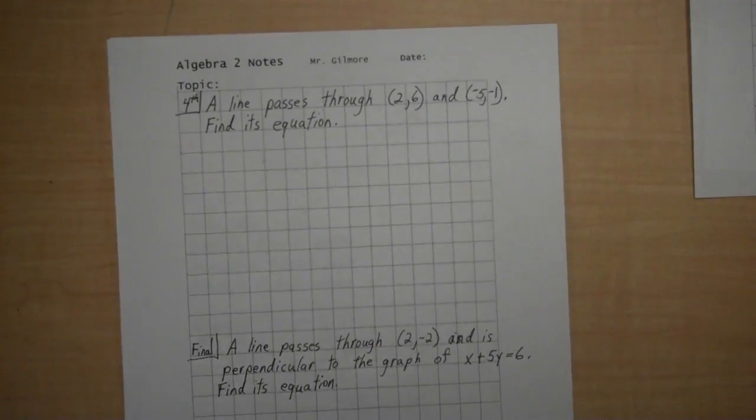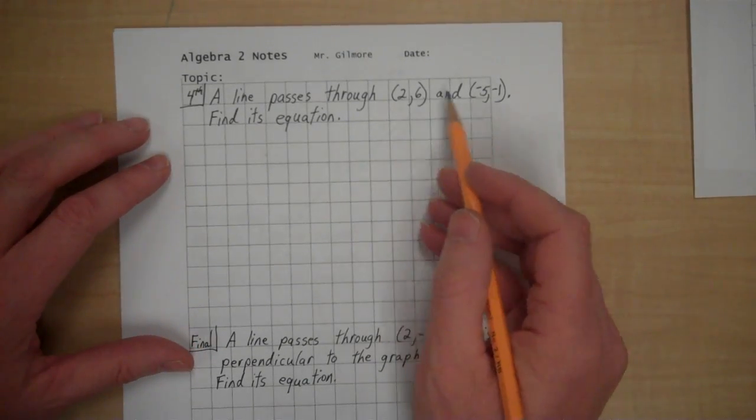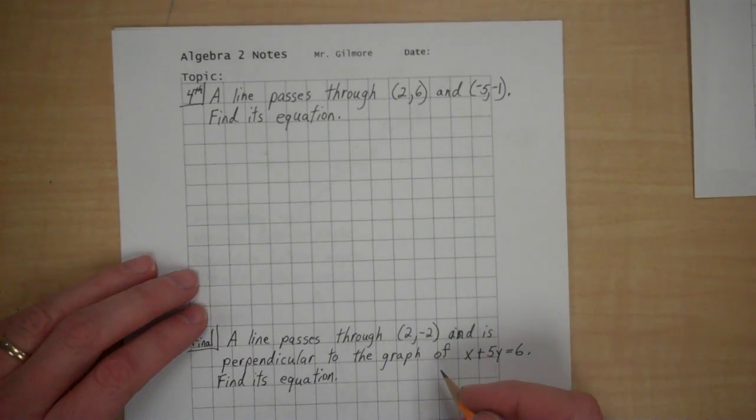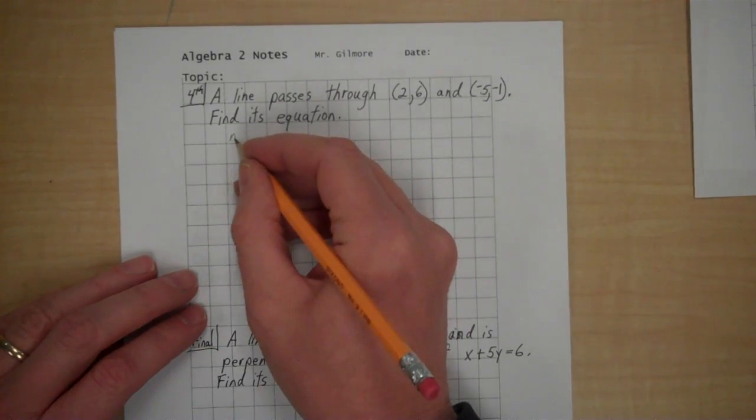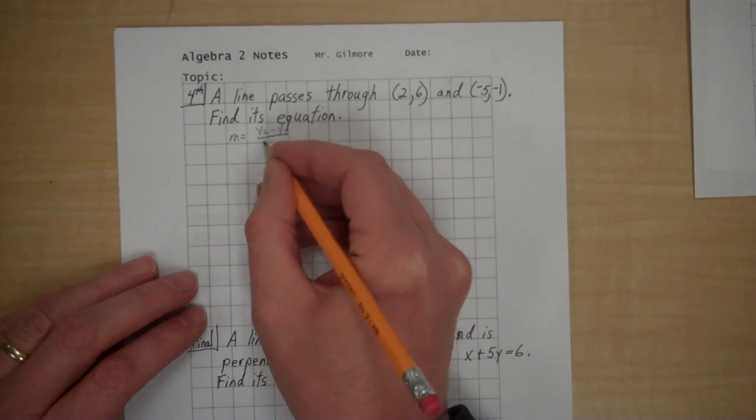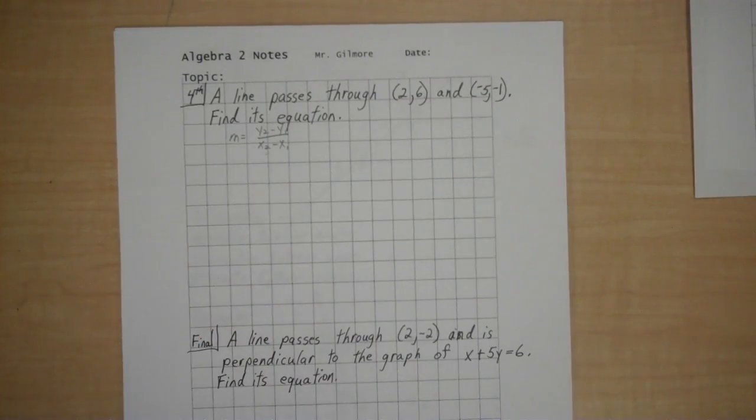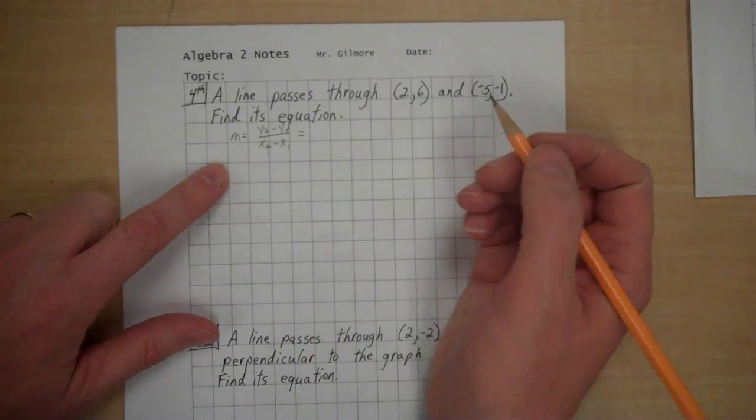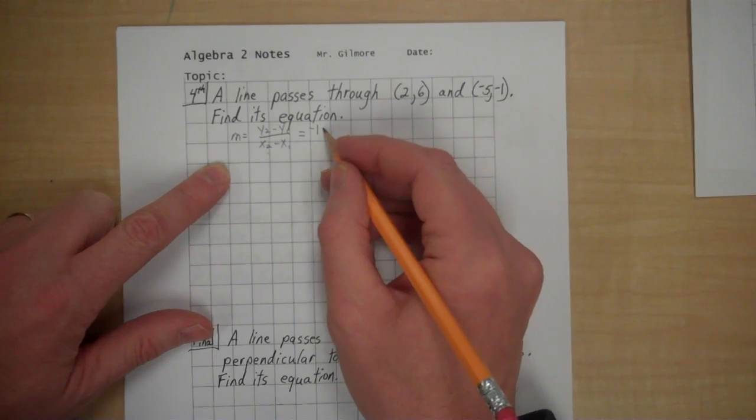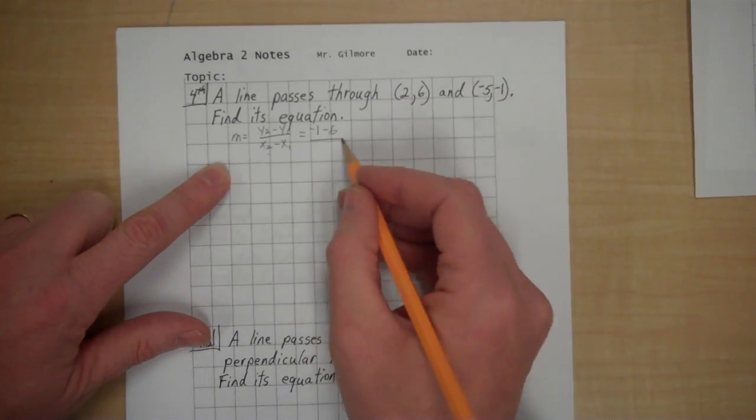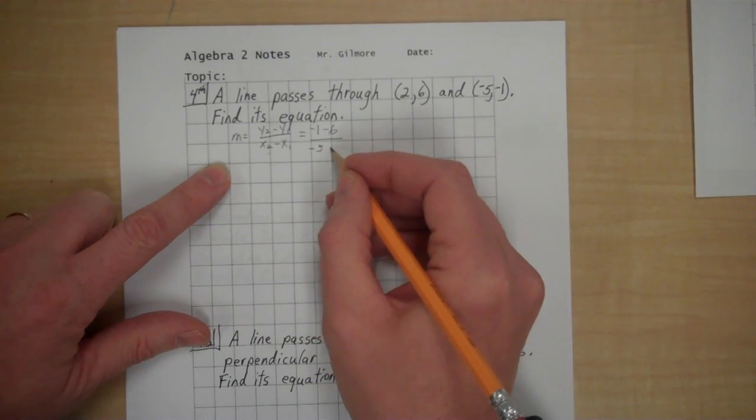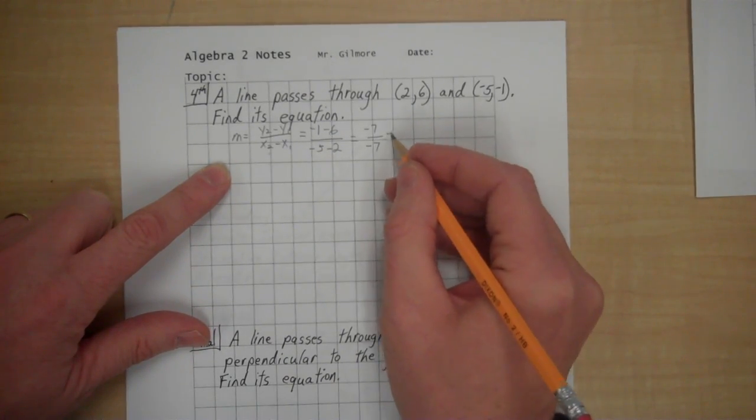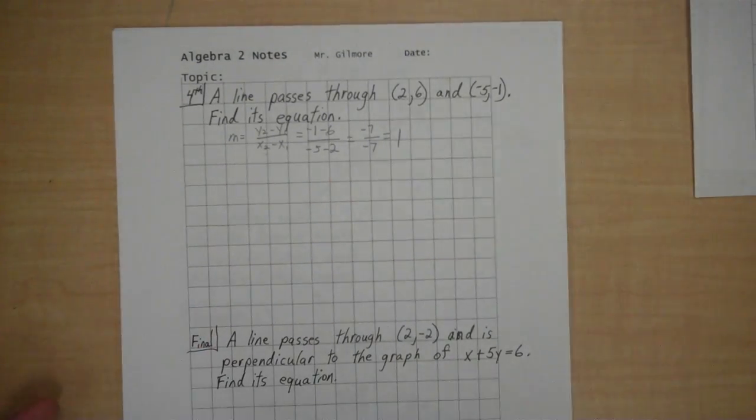Alright, fourth example. A line passes through (2, 6) and (negative 5, negative 1). Find its equation. So, I do know m equals y2 minus y1 over x2 minus x1. So I'm going to go find the slope. And then I'm going to use one of these points and do it like we did our second example. But let's find the slope first. Negative 1 minus 6 over negative 5 minus 2. Negative 1 minus 6 is negative 7. Negative 5 minus 2 is negative 7. Negative 7 divided by negative 7 is 1. So the slope is 1.